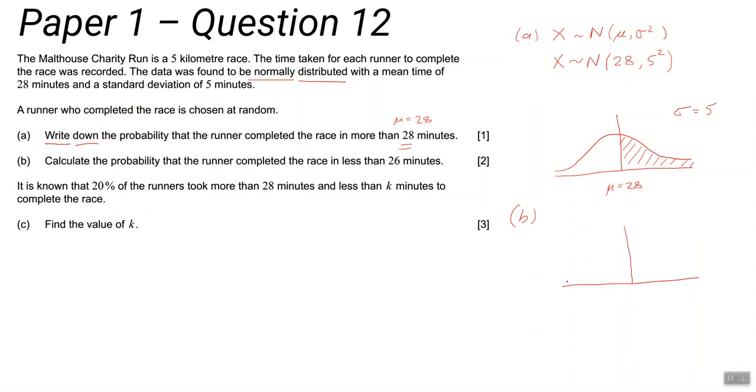For part (b), we'll draw another normal distribution curve. Hopefully mine will be a bit more accurate this time - it's not much better really. Again, standard deviation is 5, mean is 28. The people who got this question right tended to draw these curves; the people who didn't tended not to draw them. That should tell you it's worth drawing them. Find the probability that the runner completed the race in less than 26 minutes. There's 28, so 26 is going to be to the left of that, and we want 'less than.' So that's the area you want. Set your GDC up and use that to work out that area. It becomes a lot clearer now - it's just a question of getting the right settings on your calculator.